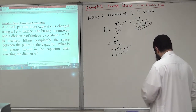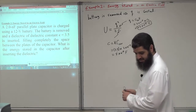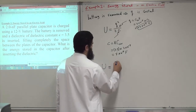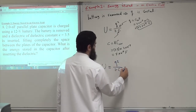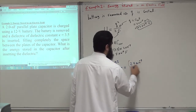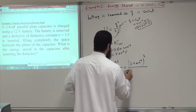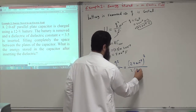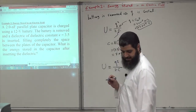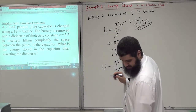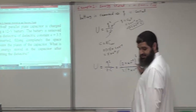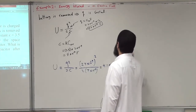Now we calculate the energy stored: U equals Q squared divided by 2C. Q is 24 × 10⁻⁹, all squared, divided by 2, and C is 7 × 10⁻⁹. As a result, the potential energy is 4.1 × 10⁻⁸ joules.